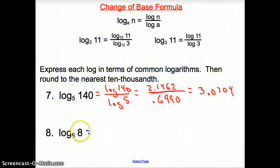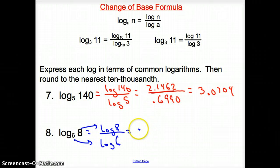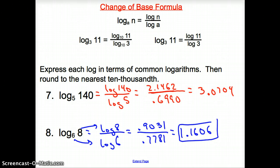Number 8 one more time. The big number, this 8, goes to the top. So it's log of 8 over log 6. That's going to equal 0.9031 over 0.7781. Punch in your calculator. We get 1.1606 for our final answer.